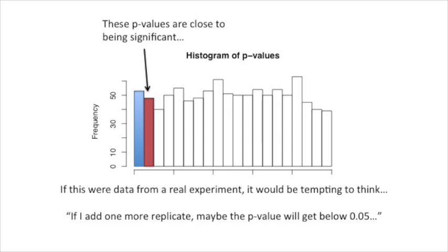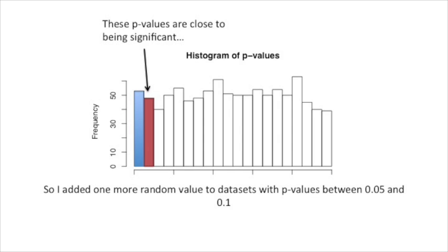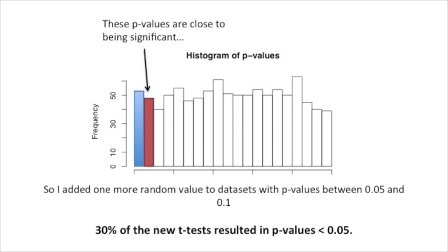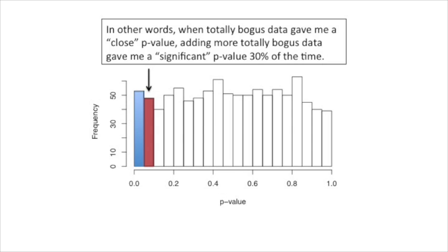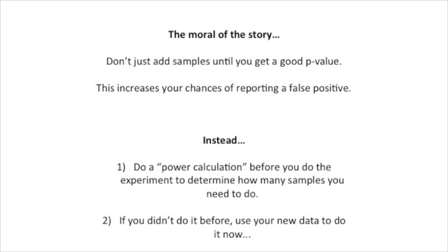These p-values are the ones that are close to being significant — the 0.051 p-values, the ones that keep you up late at night, sweating, thinking maybe I should do one more replicate. So just to see what would happen, I added one more random value to datasets with p-values between 0.05 and 0.1. And guess what? 30% of the new t-tests resulted in p-values less than 0.05. In other words, when totally bogus data gave me a close p-value, adding more totally bogus data gave me a significant p-value 30% of the time. That, my friends, is a huge false positive rate. The moral of the story is: don't just add samples until you get a good p-value. This increases your chances of reporting a false positive.